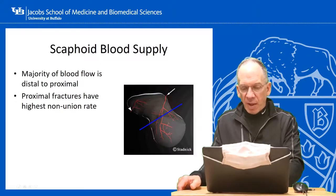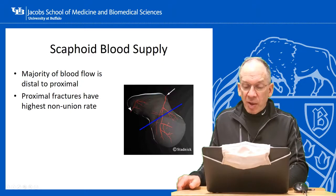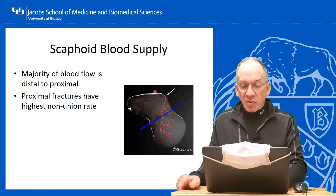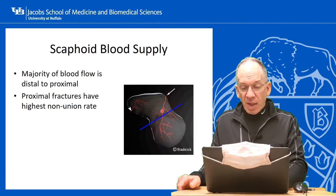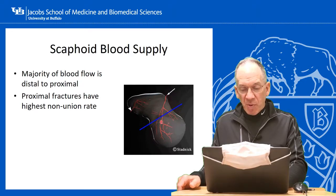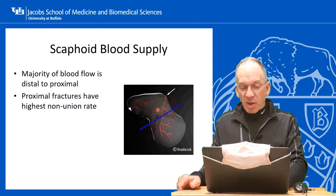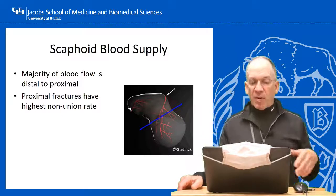The scaphoid has a very poor blood supply. In cross-section, a single vessel enters the dorsal scaphoid coming off the radial artery and supplies blood from distal to proximal. There's a small vessel at the scaphoid tuberosity but it doesn't contribute much to fracture healing. The main vessel enters dorsally and radially, going distal to proximal. So the further you are from this vessel — a proximal pole fracture — the longer it takes to heal and the higher the rate of non-union.